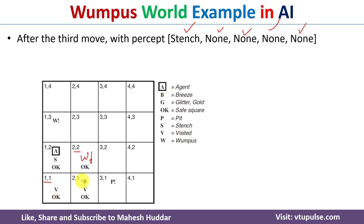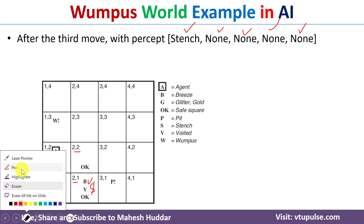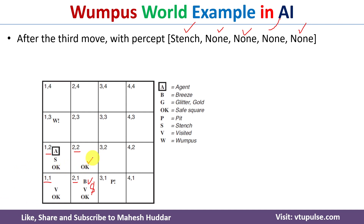However, the agent has already visited (2,1), where it perceived only breeze — no stench. Since stench was not sensed in (2,1), there is no possibility of Wumpus in (2,2). If there had been stench in (2,1), then Wumpus in (2,2) would be confirmed because both (2,1) and (1,2) would have sensed stench. But since there is no stench in (2,1), we can remove the Wumpus possibility from (2,2) and mark it as a safe state.